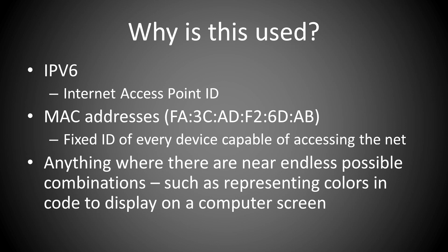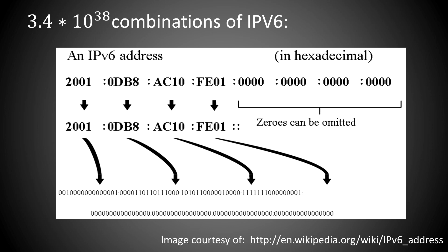To show how effective this is, IPv6 provides 3.4 times 10 to the 38 possible addresses using only 32 hexadecimal digits. This is compared to 4.3 times 10 to the 9 possible IPv4 addresses represented by 12 decimal digits.